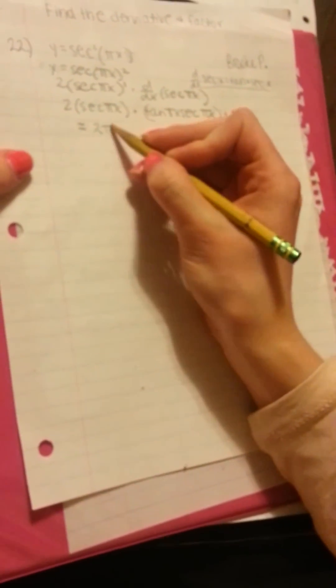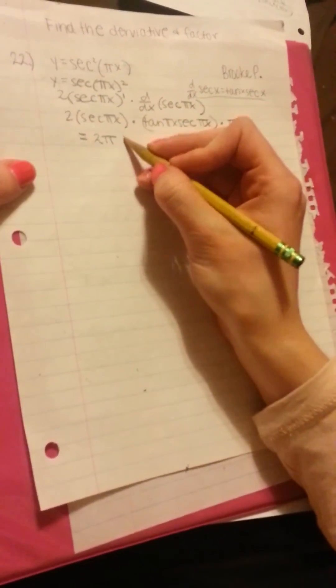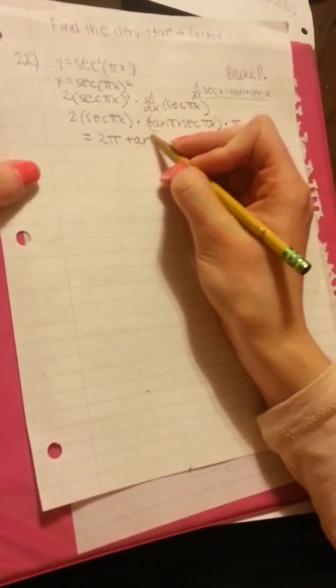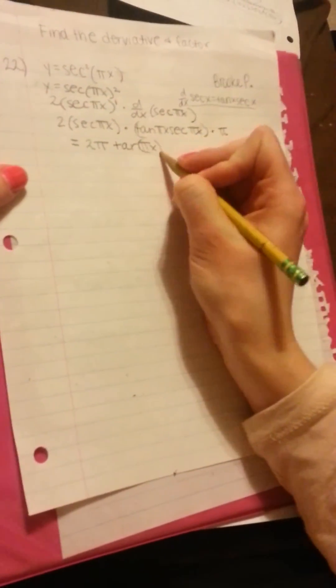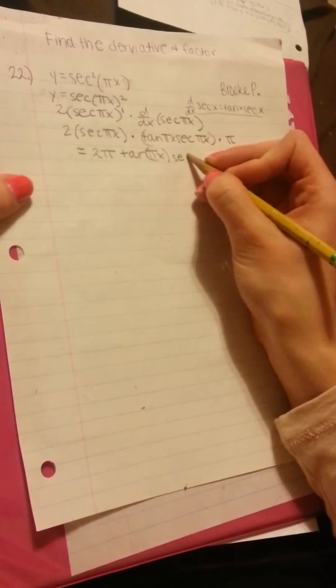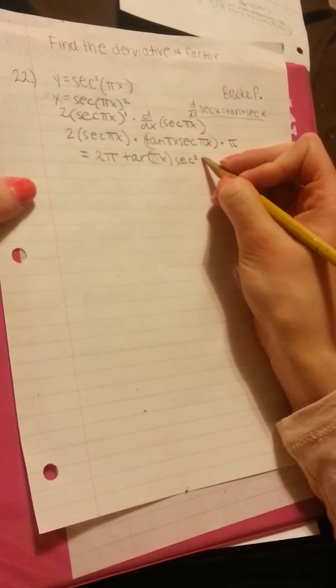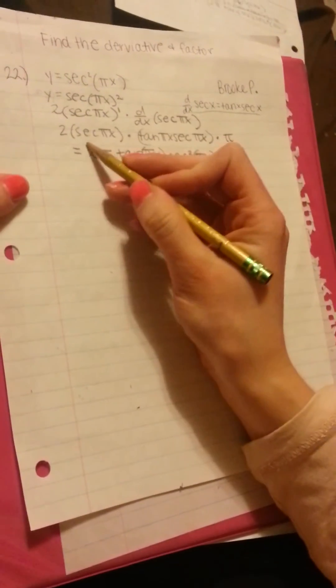Next, I'm going to combine the 2 pi together in the front. And then we write this out. Tangent pi x, and then secant pi x times secant pi x is secant squared pi x. And that is the final answer.